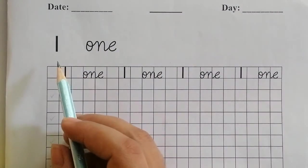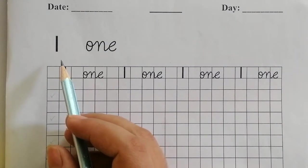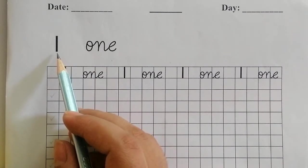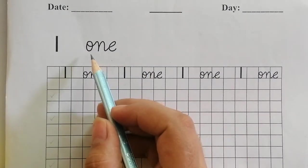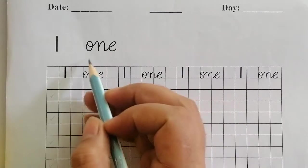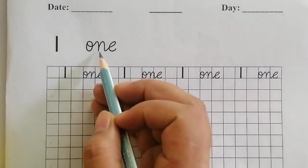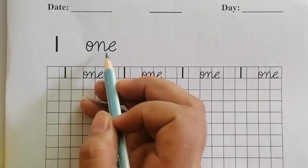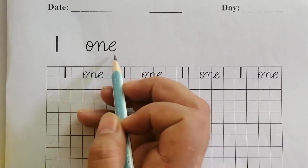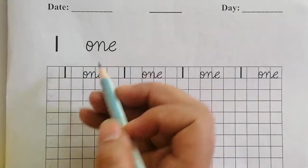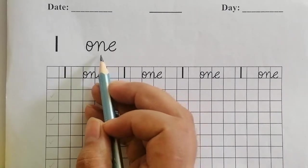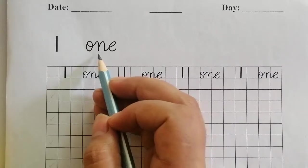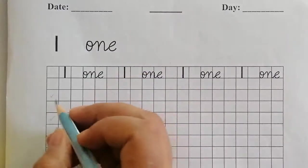Already in Nursery class we have read and write. But today we are going to read and write number 1. How to spell 1? O-N-E, 1. O-N-E, 1. Nursery class, you have to read it: O-N-E, 1. O-N-E, 1.